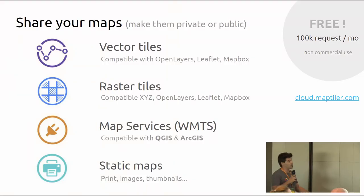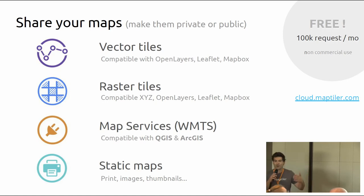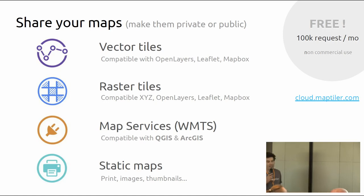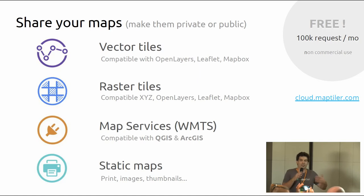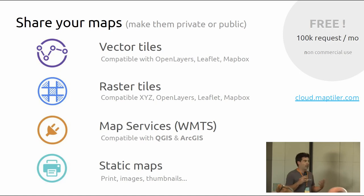Once the map is published, you can reuse it in different ways: vector tiles compatible with OpenLayers, Leaflet, and Mapbox — we are especially keen on the progress of OpenLayers with improved vector tile support. You can also use standard raster tiles (XYZ), or reuse the same map as WMTS, which brings MapTiler maps to desktop clients such as QGIS and even ArcGIS. We also offer a static maps API for print work, high resolution printing, and generating map thumbnails.